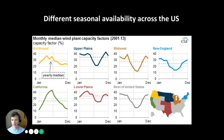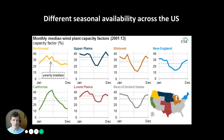Not only are there geographical differences in average wind speeds across the United States, there's also a tremendous amount of seasonality in available wind speeds that differs by region. On the x-axis are months January through December, and on the y-axis is capacity factor. The West Coast — Northwest and California — peaks in spring and summer, which looks very different from the Plains, Midwest, and New England, where wintertime is the highest period for wind power production.